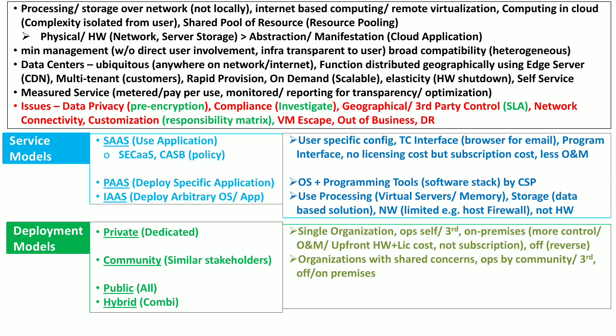In the community cloud, organizations with similar or shared concerns, policies, or security requirements can deploy this cloud. It may be operated by any member of the community or a third party, and it may be located on the premises of any community organization or on the premises of the third party or cloud service provider. The public cloud is an open cloud for use by everyone on the internet, and it may be owned by any business, academia, or government. It is located only on the premises of the cloud service provider.